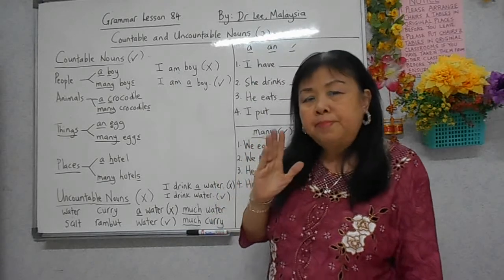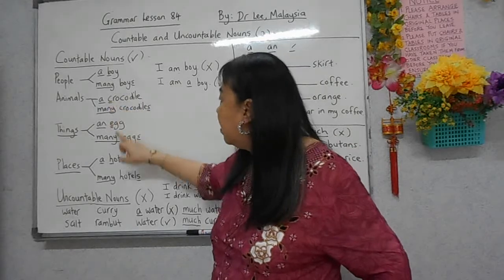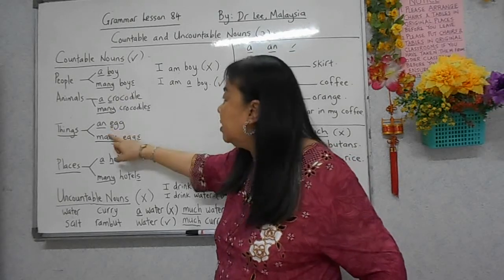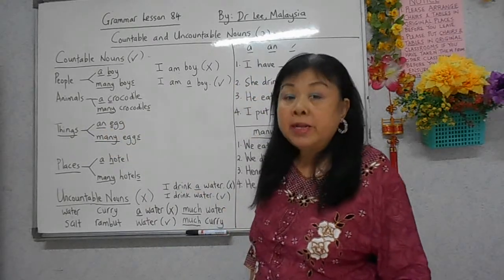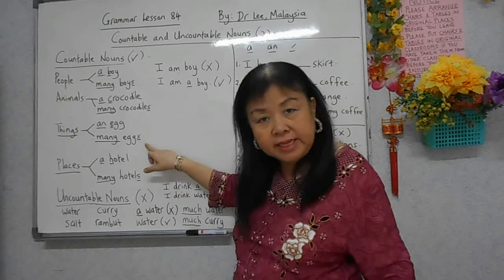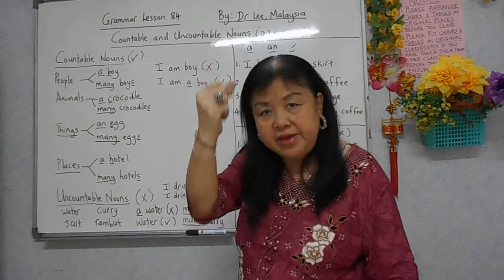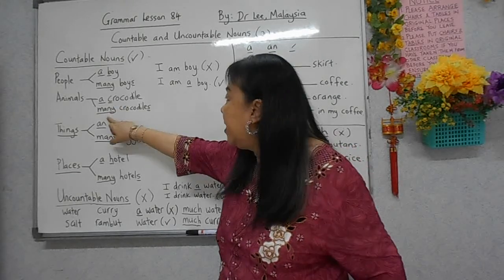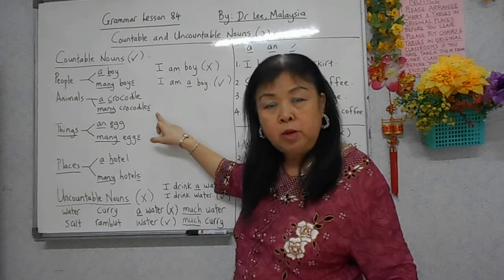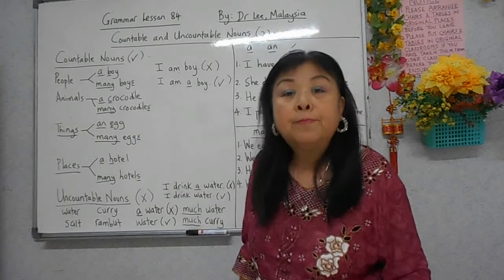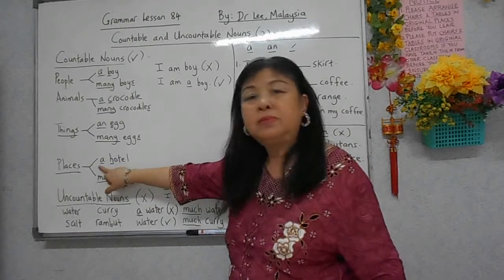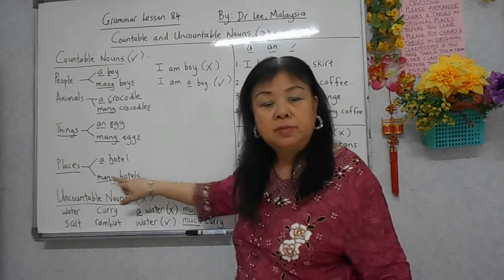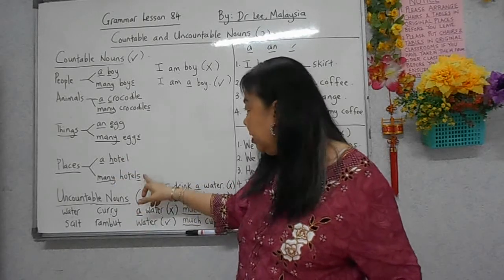Kalau perkataan itu bermula dengan huruf A, E, I, O, U - iaitu vowels - maka kita mesti gunakan 'an'. Contoh, 'an egg'. Kalau banyak telur, 'many eggs' - tambah S untuk menunjukkan banyak. 'A crocodile', seekor buaya. Kalau banyak, 'many crocodiles'. 'An hotel' sebab dia bermula dengan huruf H - wait, 'an' sebab huruf vokal. 'Many hotels' - banyak hotel, mesti ada S.